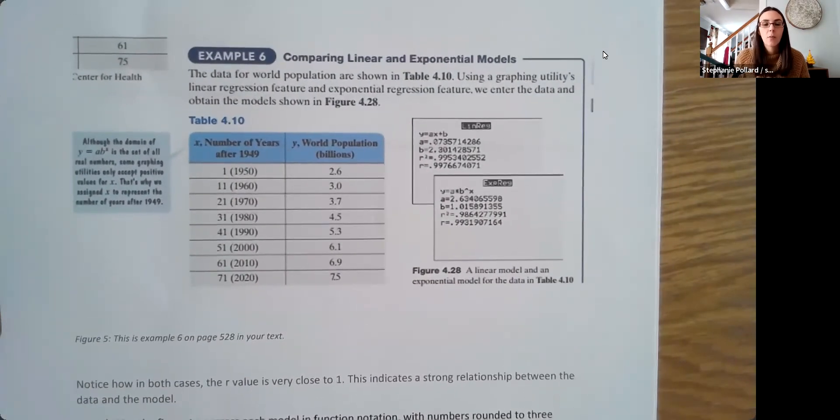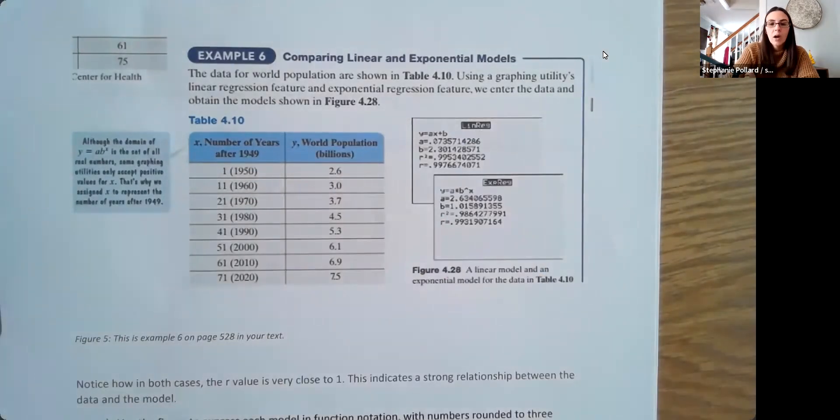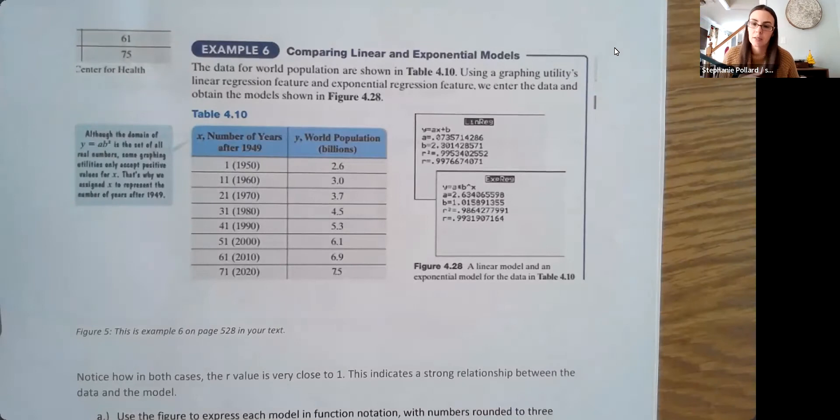So here is that same data for world population, and we just have it written out in table format. And we're going to use our calculator to look at two different models. So here we went through and we used our TI-83/84 calculator series, and we ran the regression models for linear, which is the one we thought that it looked like, and also exponential.